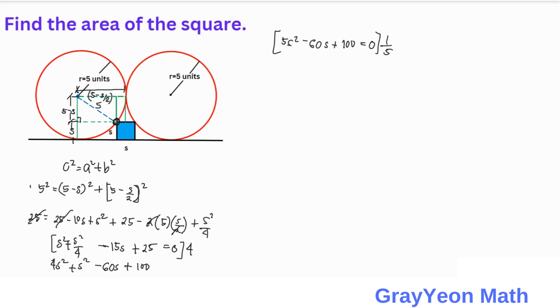this becomes S squared minus 12S plus 20. We need to think of factors of 20 that have a sum of negative 12. So we have S minus 10 and S minus 2, which gives us 20 with a sum of negative 12.